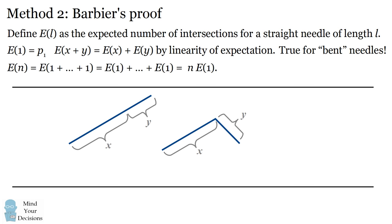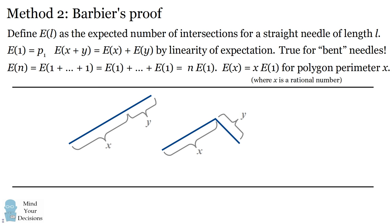We can now establish results about expectations. If you have a needle of length n, the expected number of intersections is n times the expected number of intersections for a needle of length one. We can generalize: for a polygonal needle with perimeter x, the expected number of intersections is x times E of one. To be precise, this holds where x is a rational number.